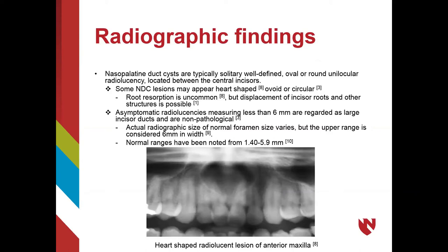The size of the lesion radiographically is important in terms of definitive diagnosis. A normal nasal palatine duct ranges from 1.4 mm to 5.9 mm. Therefore, a radiolucency between the maxillary central incisors measuring less than 6 mm is considered a normal, non-pathological nasal palatine duct. Whereas a radiolucent lesion measuring greater than 6 mm between the maxillary central incisors should be investigated further, and a nasal palatine duct cyst should be included in a differential diagnosis.